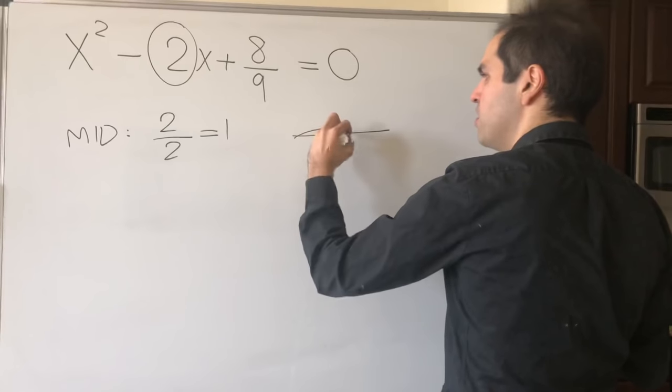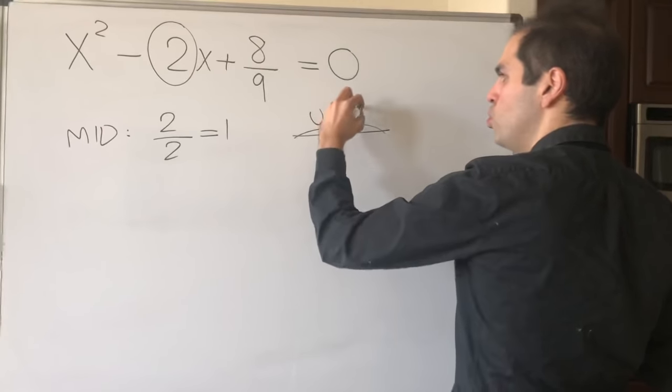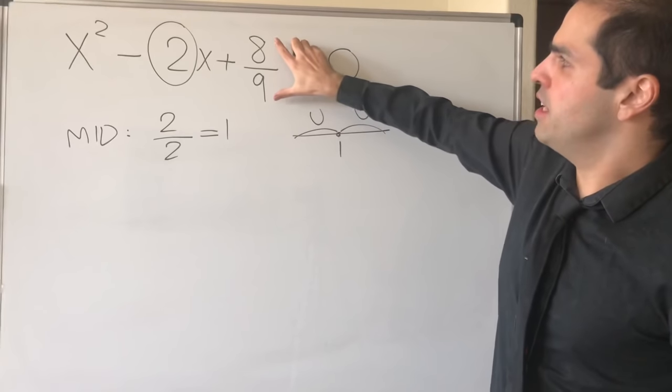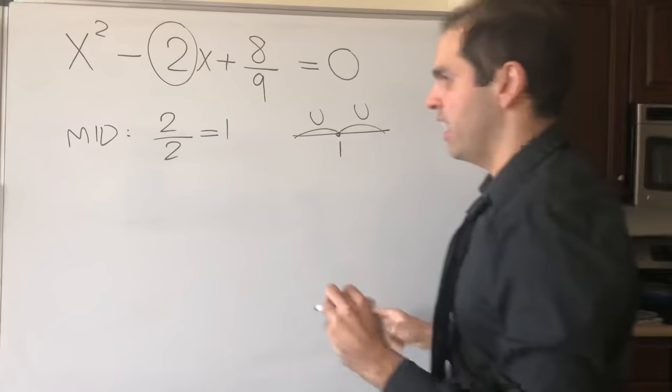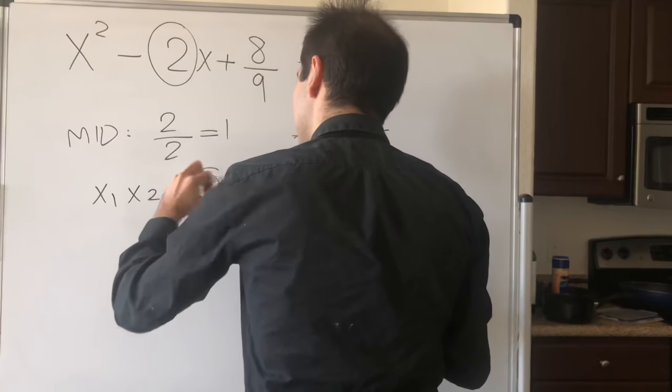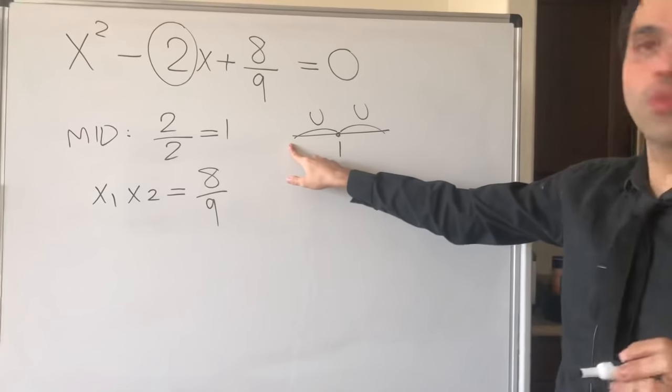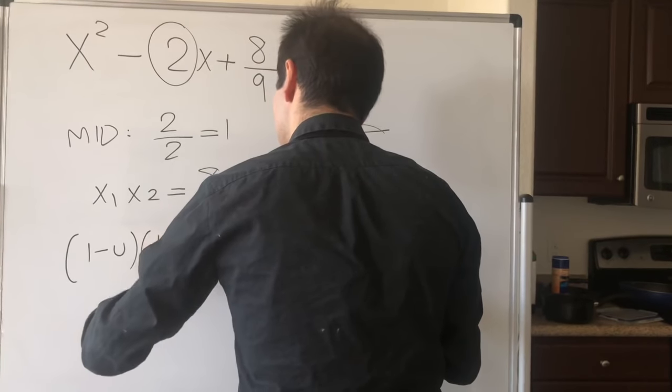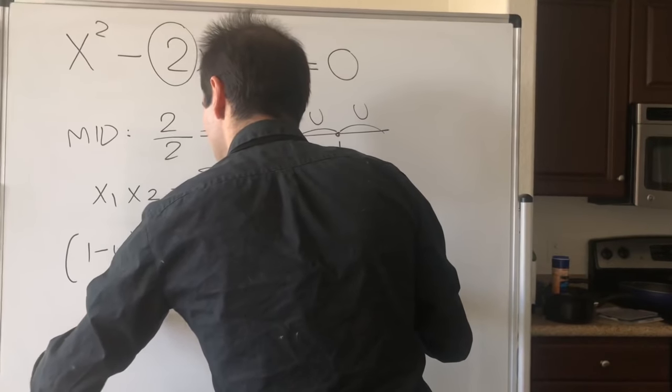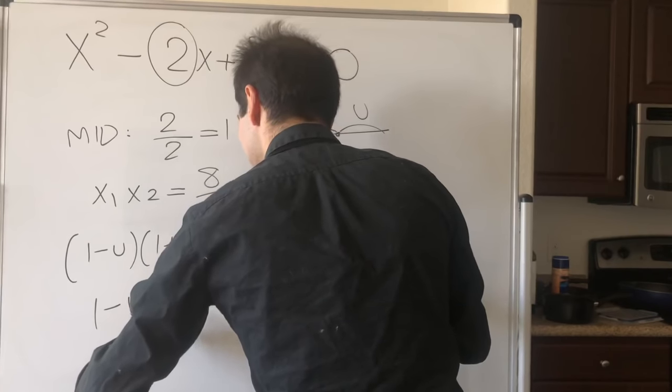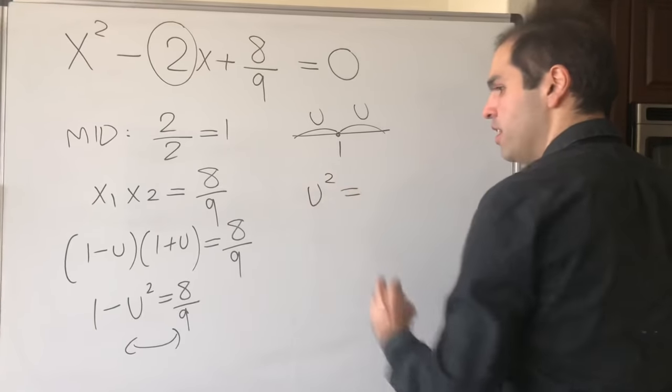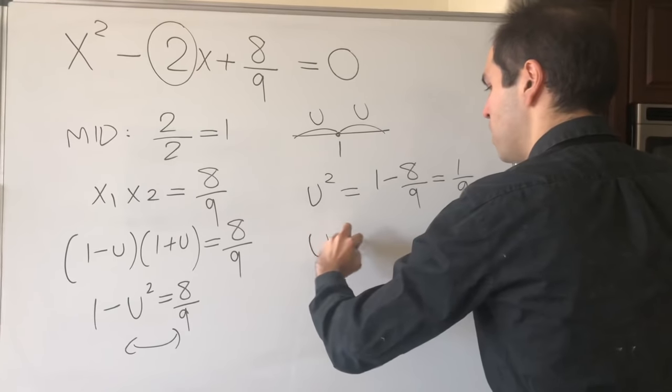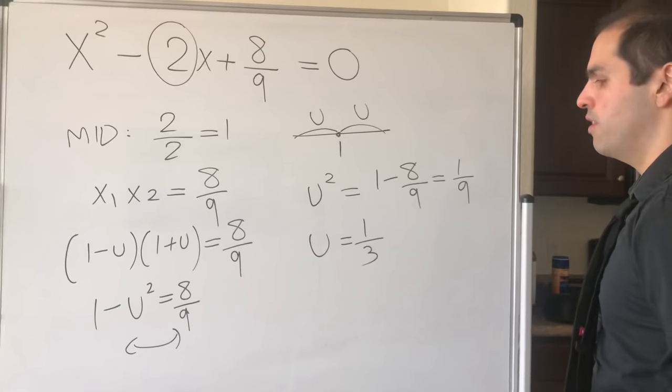The midpoint is 1, and then one root is u to the left, the other root is u to the right. And in particular, what is the product? It is x₁x₂ = 8/9. So the left root is 1 - u, the right root is 1 + u. So (1 - u)(1 + u) = 8/9, giving 1 - u² = 8/9. So u² = 1 - 8/9 = 1/9. So u becomes 1/3.